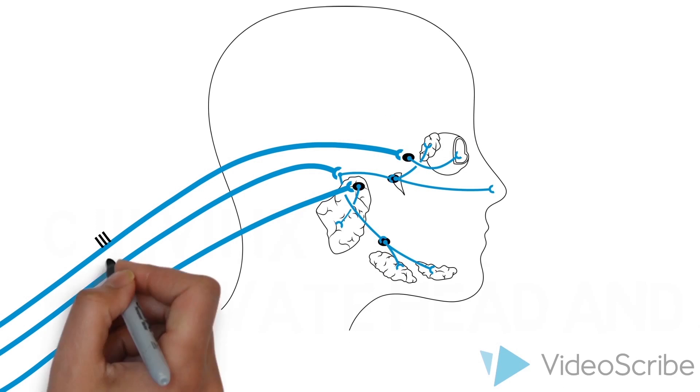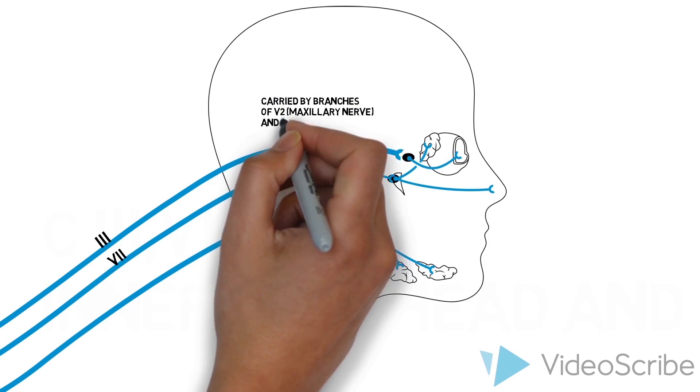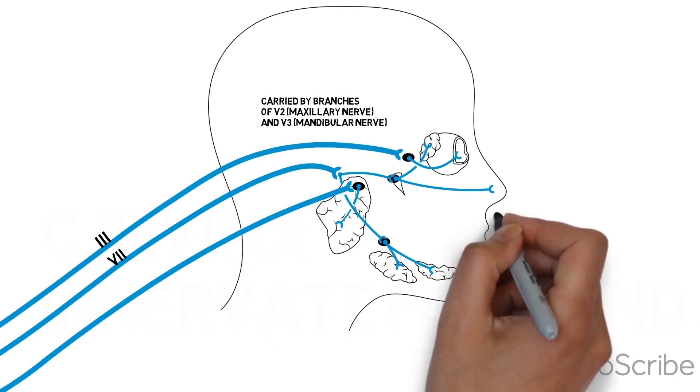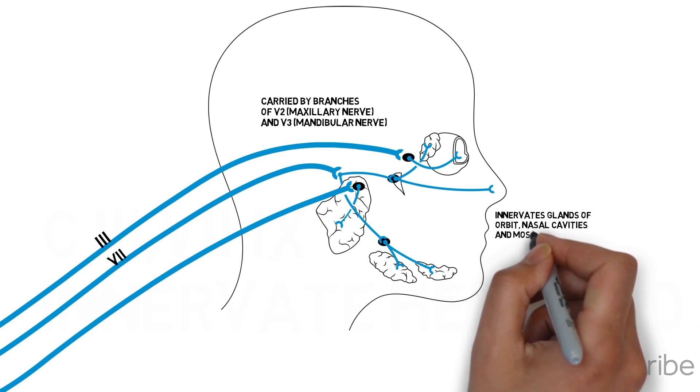Fibers of 7 are carried by branches of V2, or the maxillary nerve, and V3, the mandibular nerve, to innervate glands of the orbit, nasal cavities, and most of the oral cavity.